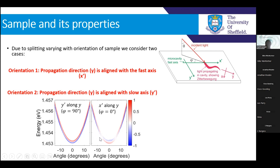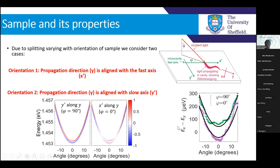This is just a plot of how the TE-TM splitting varies for each orientation — a parabolic relationship where energy splitting is dependent on k².